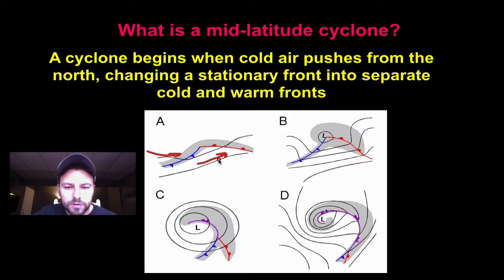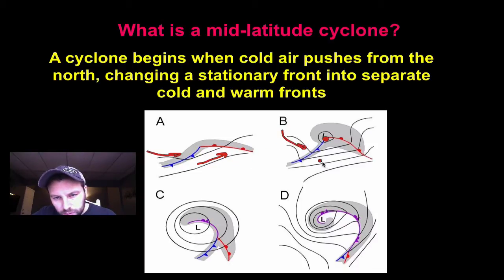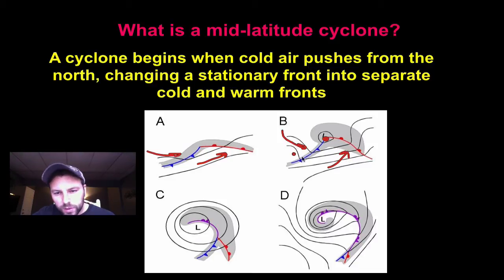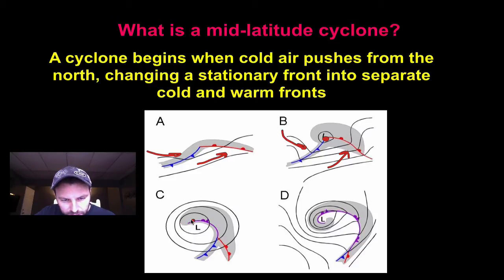You can see they're almost moving in the same direction. What ends up happening is we get a low pressure system developing at where the two fronts intersect, which causes a rotation of the fronts. You can see we have that counterclockwise rotation. The warm front starts moving up this way, and cold air is moving down from the north. Over time, that low pressure gets a little bit stronger.